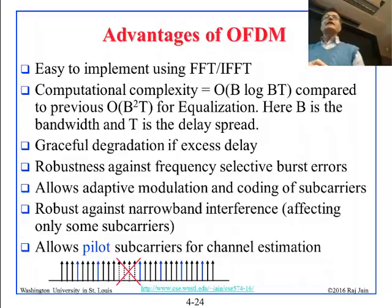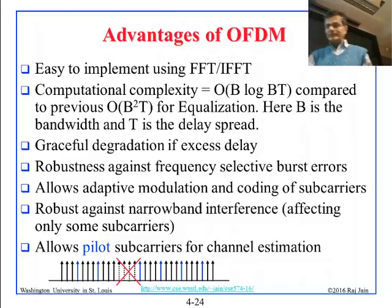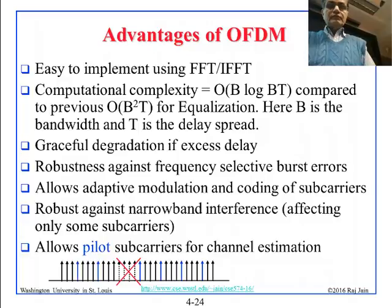OFDM is also robust against frequency-selective burst errors. If interference hits a particular frequency, that does not cause total failure because other subcarriers are still carrying data. Frequency-selective errors may wipe out certain frequencies, but the rest are unaffected.